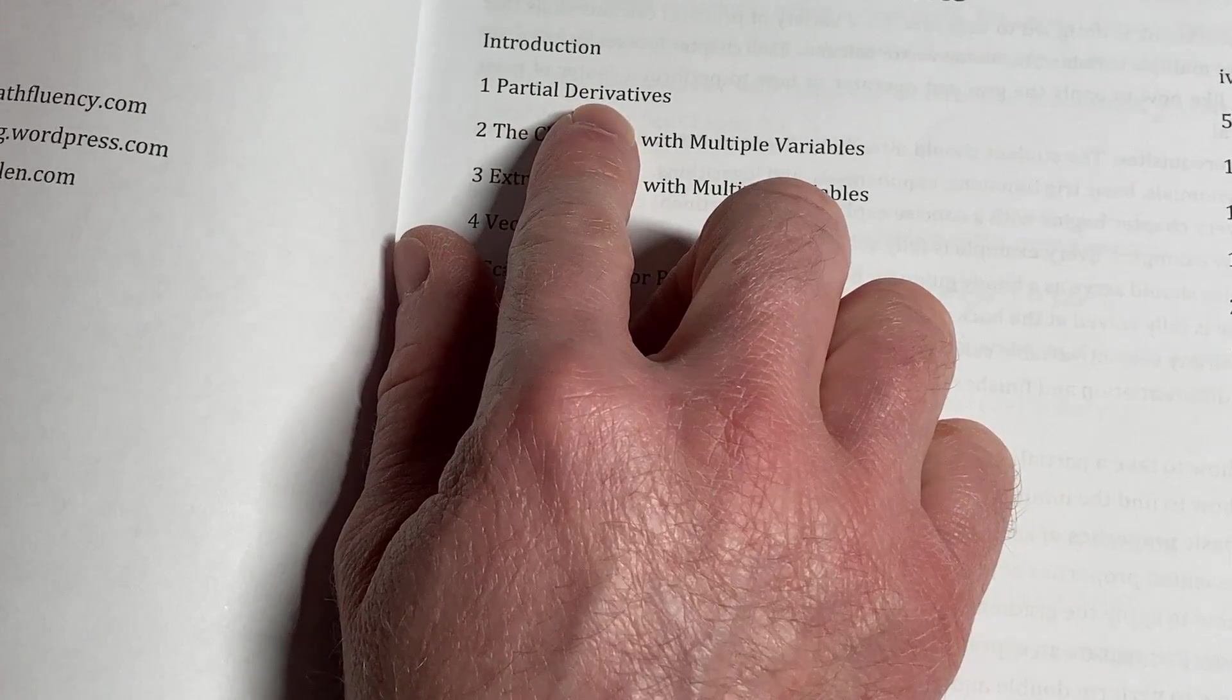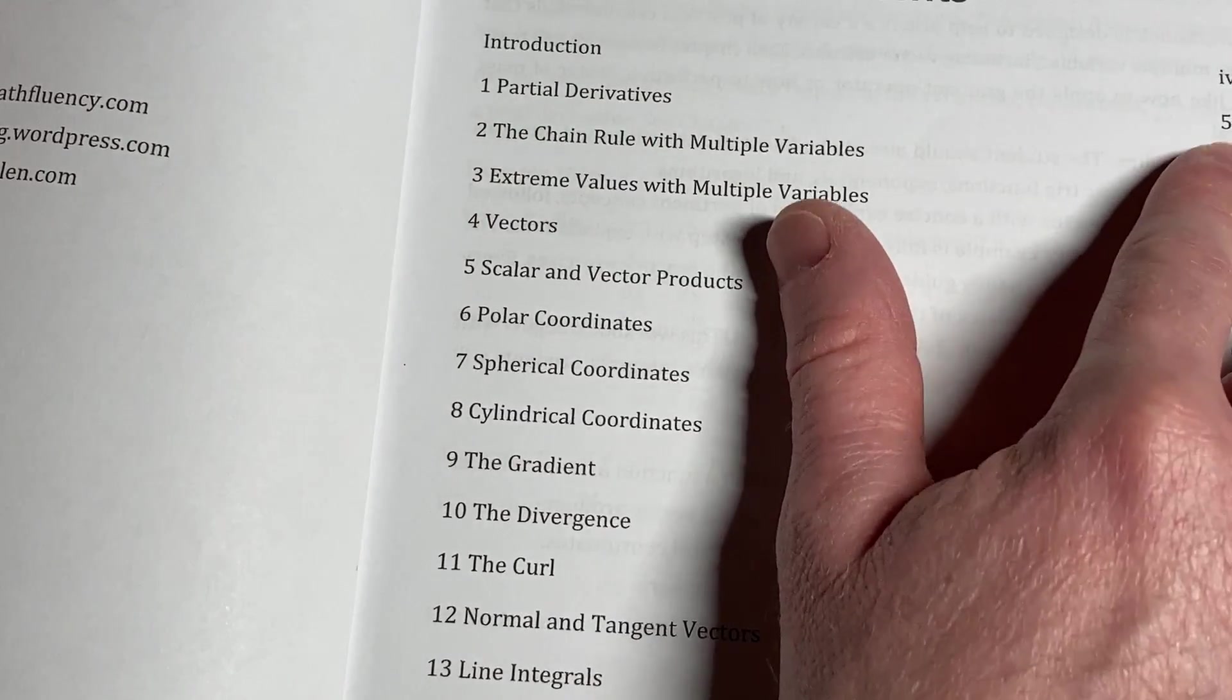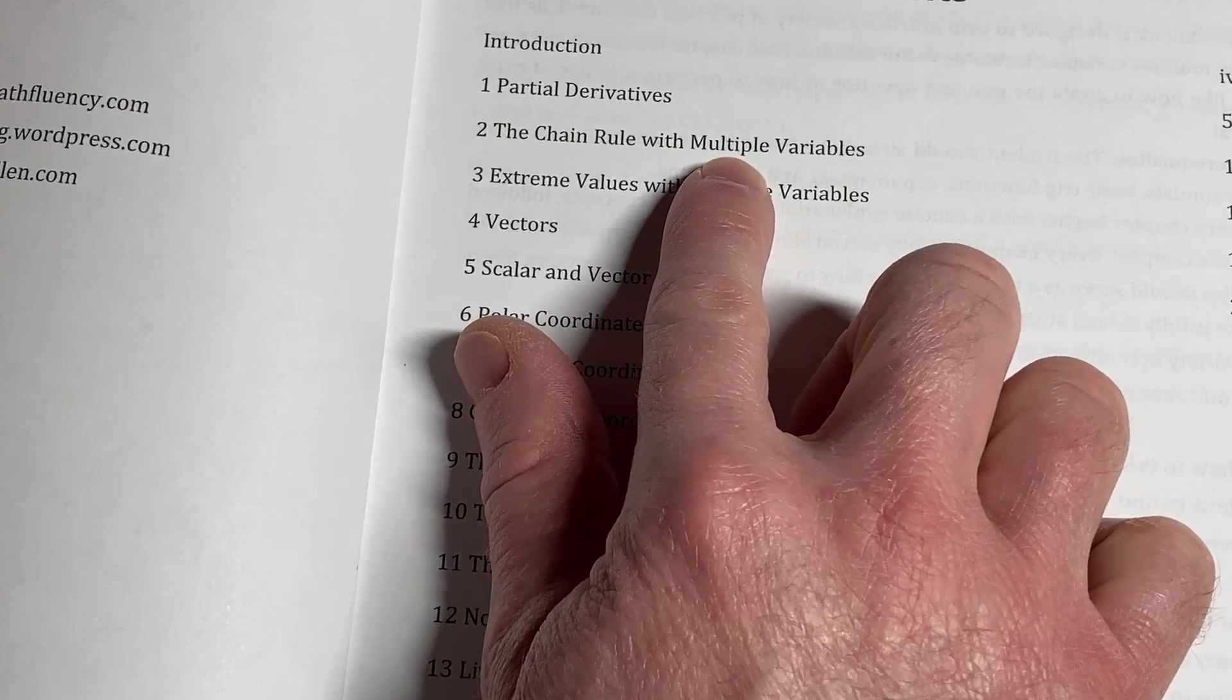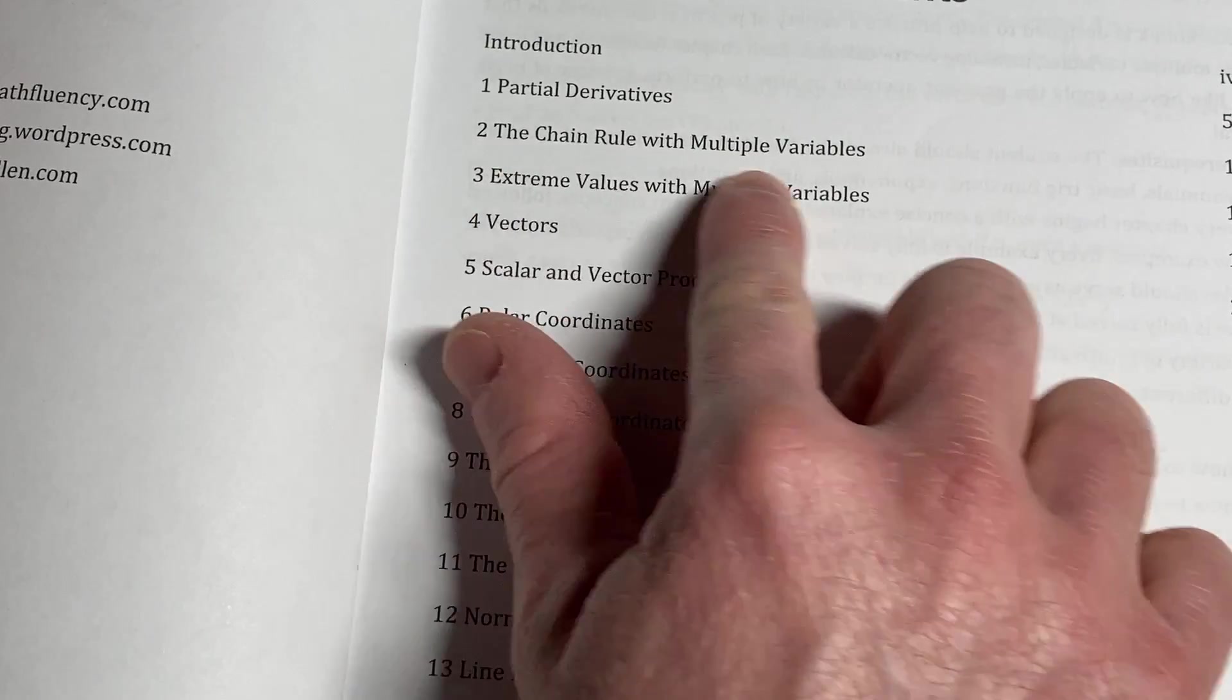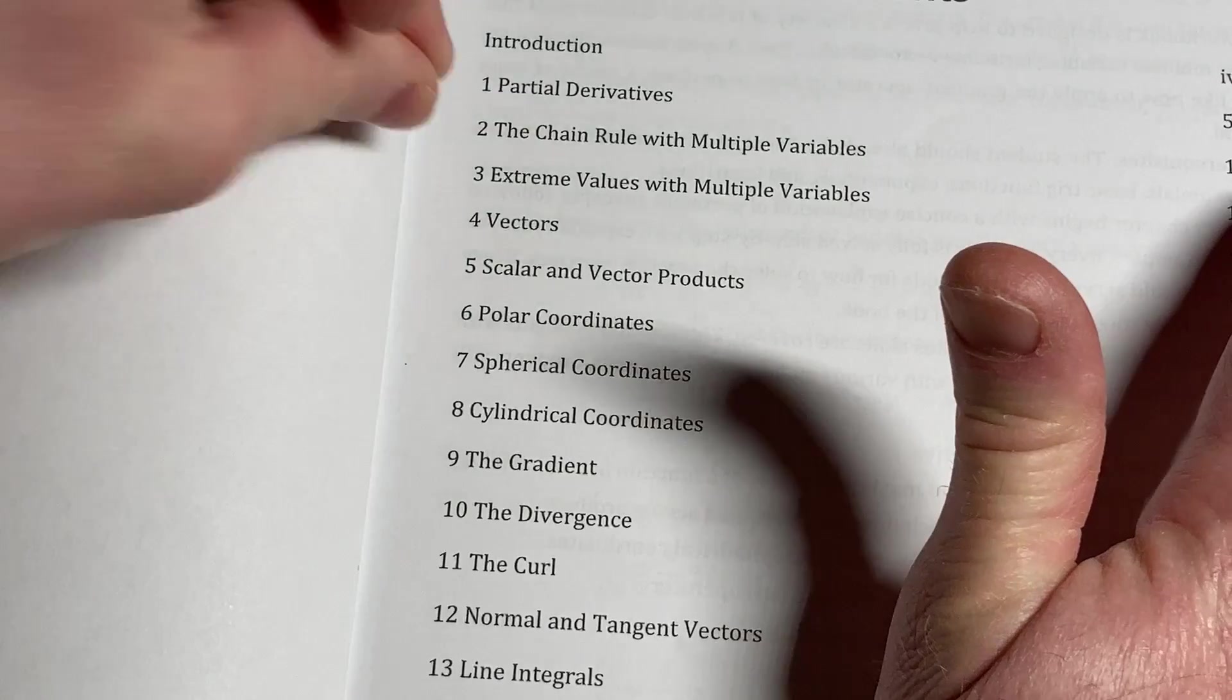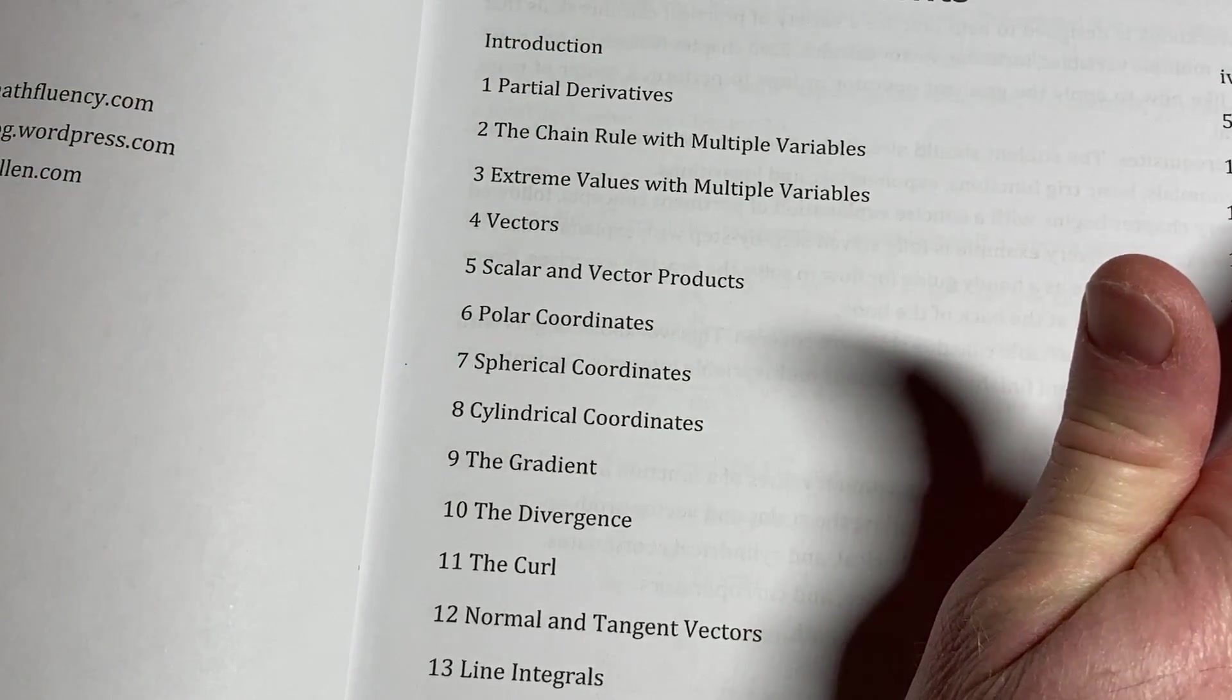And then here we have the contents. Let's take a look at these contents. So it starts with partial derivatives. So partial derivatives are pretty easy. It's a good place to start. Then it jumps to a very interesting topic, which is the chain rule with multiple variables. So this is a much harder topic. It's much, much messier. And this is a place where the book shines. It gives you those examples that really, really help you.